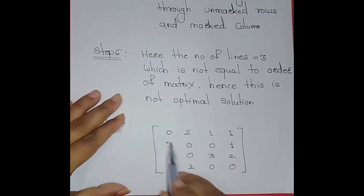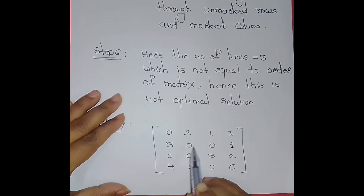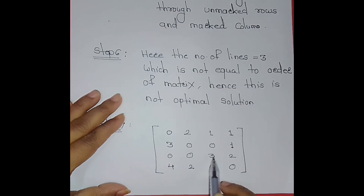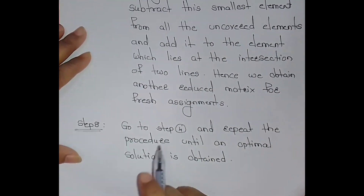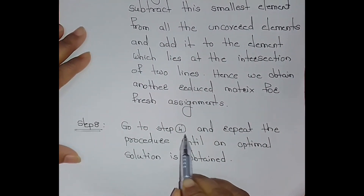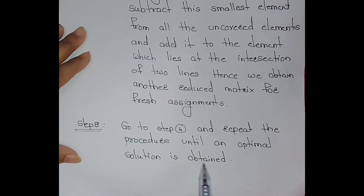The new reduced matrix is: 0, 2, 1, 1 / 3, 0, 0, 1 / 0, 0, 3, 2 / 4, 2, 0, 0. Step 8: go back to step 4 and repeat the procedure until an optimal solution is obtained.